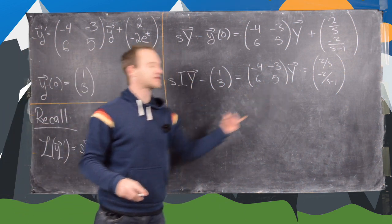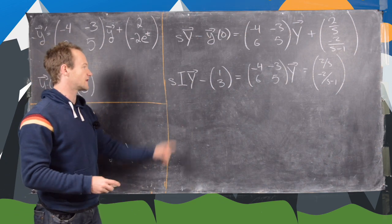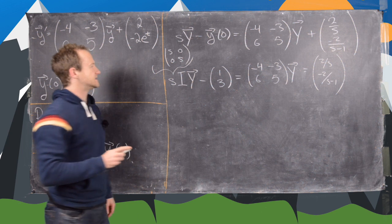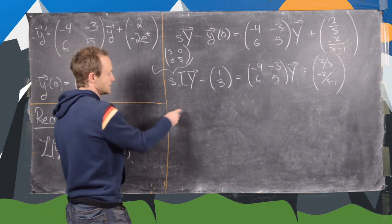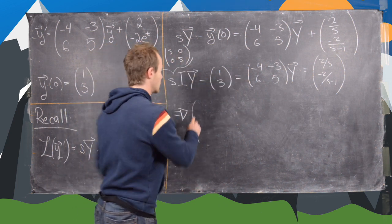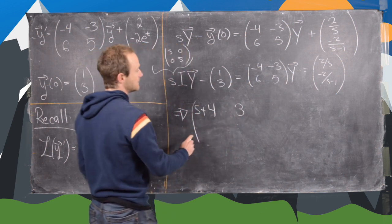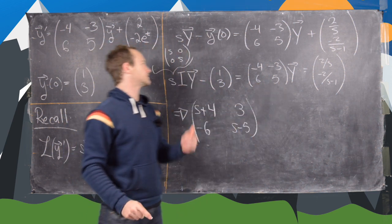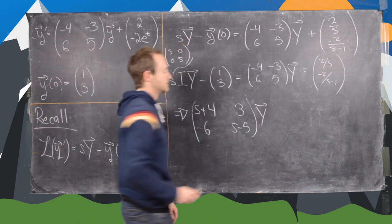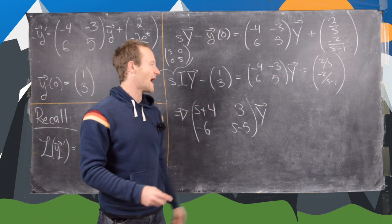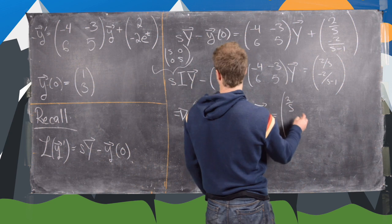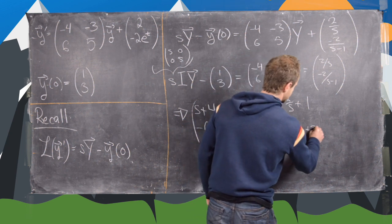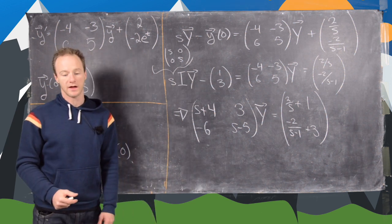Moving terms to the appropriate sides, the s·I matrix is [s, 0; 0, s], and subtracting the coefficient matrix from it gives us [s+4, 3; -6, s-5] times Y. Moving the initial condition vector to the right-hand side, we get the vector [2/s + 1; -2/(s-1) + 3].